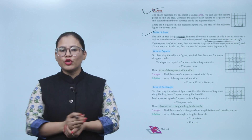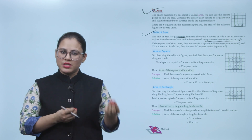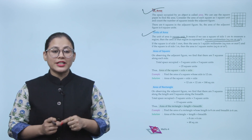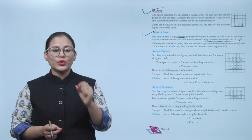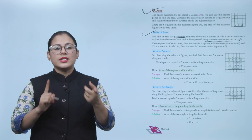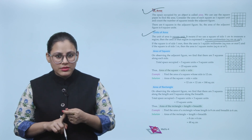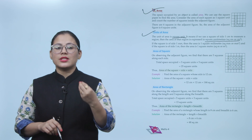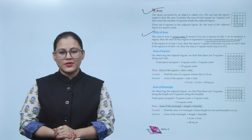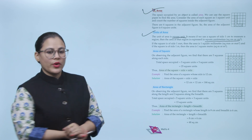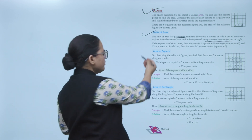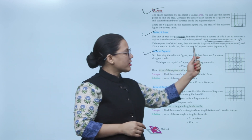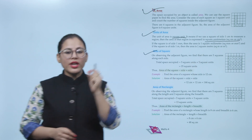Just as we discussed for perimeter — the unit was centimeter, meter, or millimeter — for area, the unit is always square: square meter, square millimeter, or square centimeter.